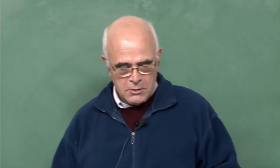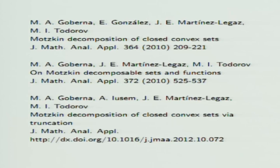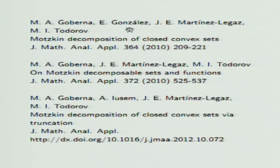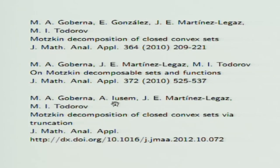The talk is going to be based on three papers — these are the only three papers, as far as I know, in which the notion of Motzkin decomposition is used. The three papers are co-authored by Miguel Angel Goberna from the University of Alicante, Spain, and Maxim Todorov from Universidad de las Américas, Puebla, Mexico. There is also another co-author in the first paper, Enrique González, who at the time was a PhD student of Maxim Todorov. In the last paper there is another co-author, Alfredo Iusem from IMPA in Rio de Janeiro, Brazil. The three papers are in the Journal of Mathematical Analysis and Applications; the first two were published in 2010 and the last paper is already online but has not appeared in print yet.